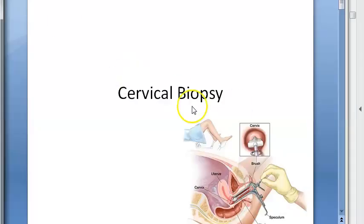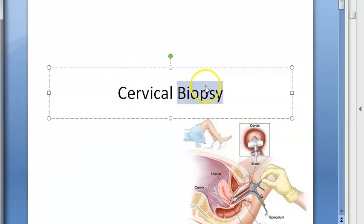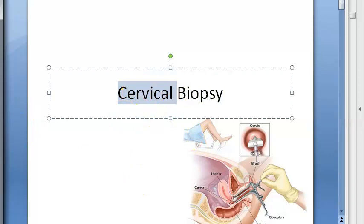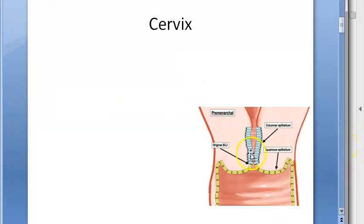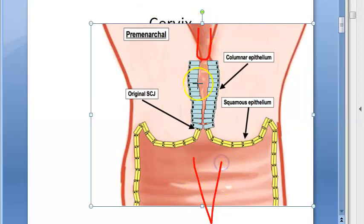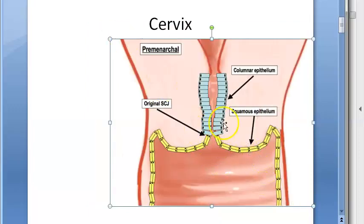In this video, let us look at cervical biopsy. Biopsy means taking a sample of tissue - in this case, from the cervix. The cervix is the part between the uterus and the vagina. It is a cylinder-shaped neck of tissue that connects the vagina and uterus.